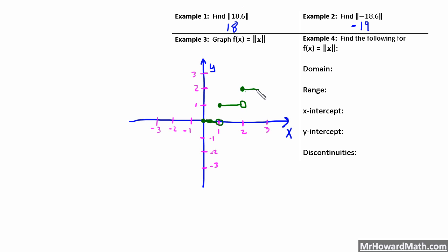When x is 2.7, y is still 2. When x is 3, it steps up to 3. When x is 3.1, y is 3; when x is 3.5, y is 3; when x is 3.9, y is 3. When x gets to 4, we step up to 4.